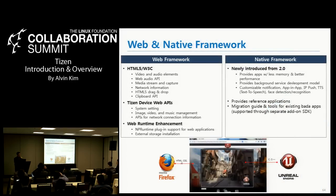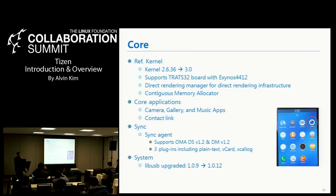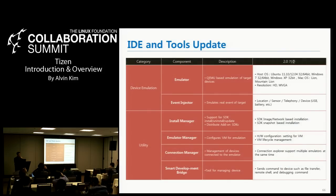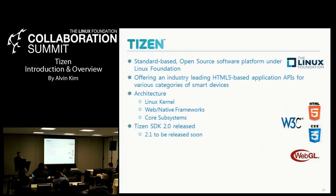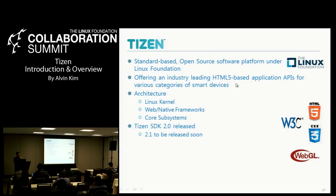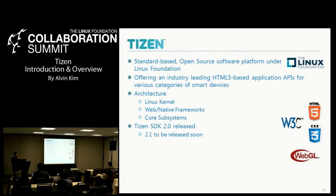This is the brief summary of the Tizen 2.0 update. Many features were introduced to web, native, core, and also to the IDE and tools. In conclusion, Tizen is a standard-based open source software platform under the Linux Foundation, offering HTML5-based application APIs. Web is the primary development environment, but we also provide the native framework. There is a three-layer architecture from Linux to core to web and native framework. Tizen SDK 2.1 will be released soon. Thank you.